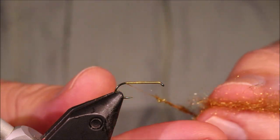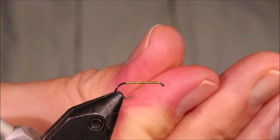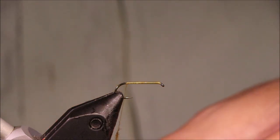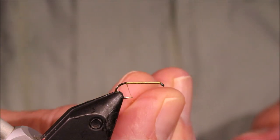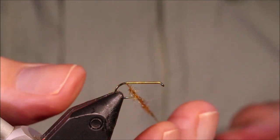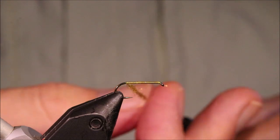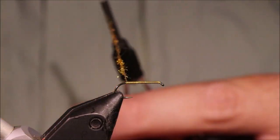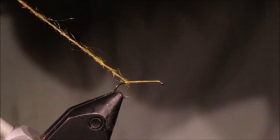Now for the abdomen, well the whole body dubbing, I'm using this blend of SLF that I mix myself. I like it for a lot of caddis patterns. It's just a mix of honey, the colors are dark honey, golden olive and tan. And I've just blended them in nearly equal parts, maybe slightly more honey. And I've blended them in the coffee grinder.